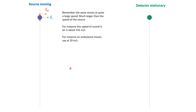In this video we want to discuss the case where the source is moving but the detector is stationary. We want to see the perceived frequency by the detector — how much is it compared to the frequency that the source is emitting the wave at.